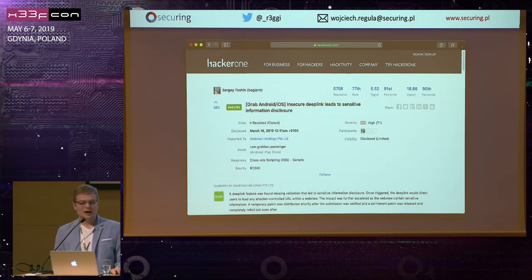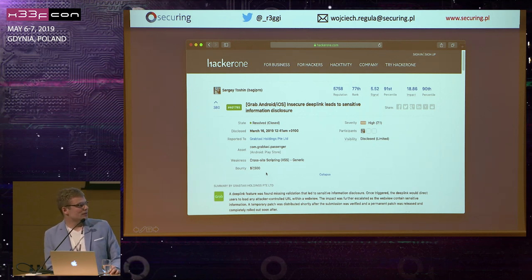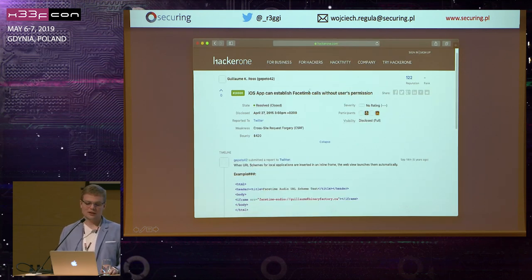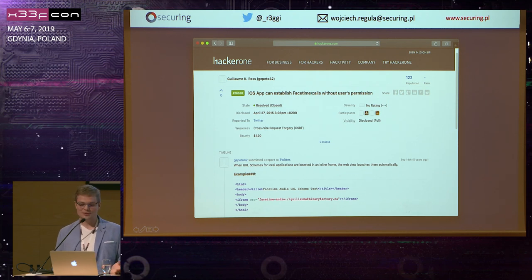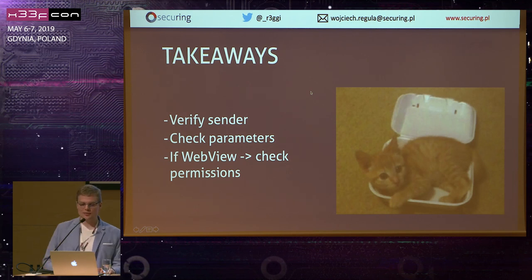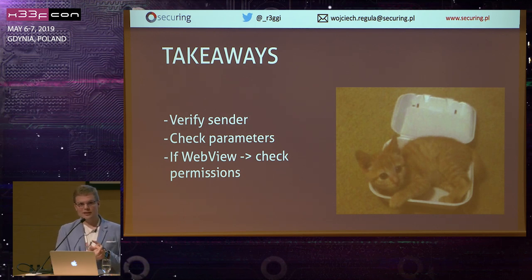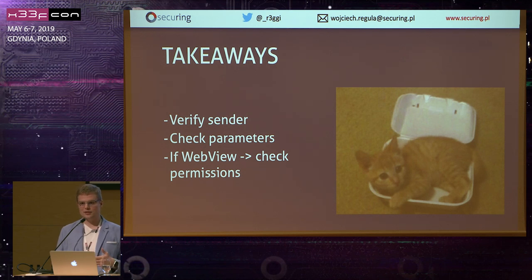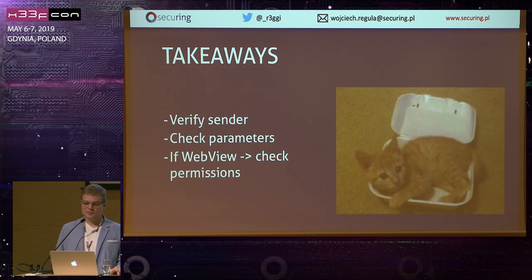From real-life examples: Grab had a similar problem with URL schemes and paid over $7,000 for it. And Twitter had an interesting bug where an iOS application could establish FaceTime calls without the user's permission. The takeaway: check if a message comes from an expected sender, strictly validate parameters, and if URL scheme parameters are passed directly to a WebView, check the permissions of that WebView because it can lead to serious consequences.